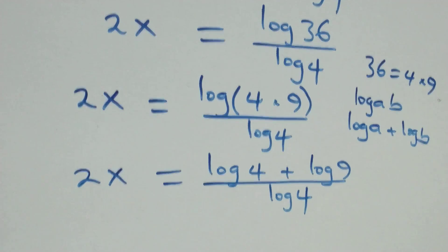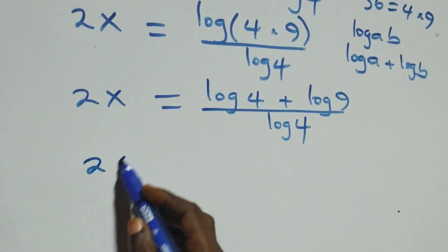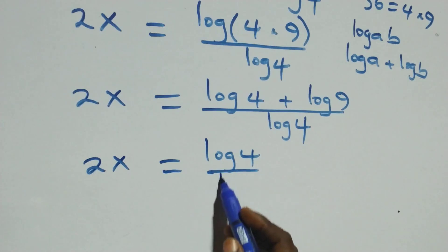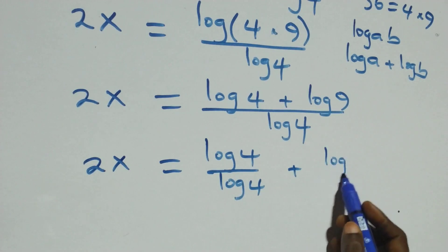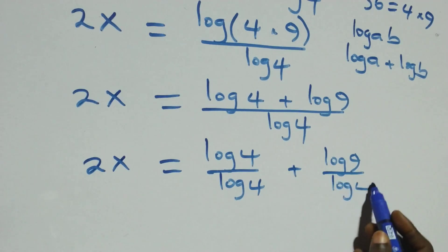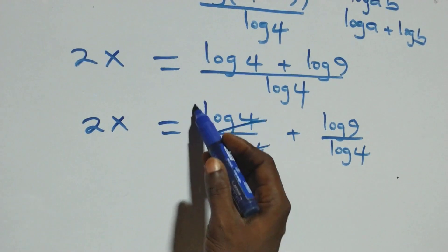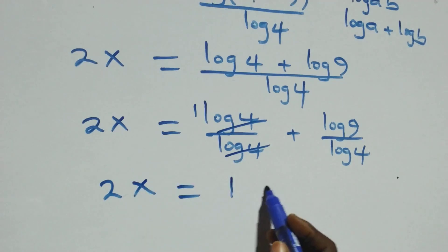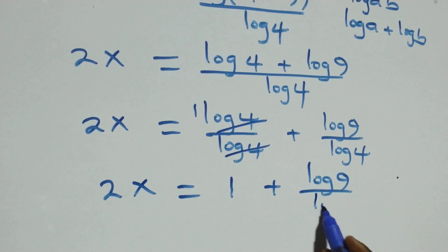The next step here, we have 2x equals to log 4 plus log 9 over log 4. Here, log 4 cancels each other — we have 1 left — and so 2x now equals to 1 plus log 9 over log 4.